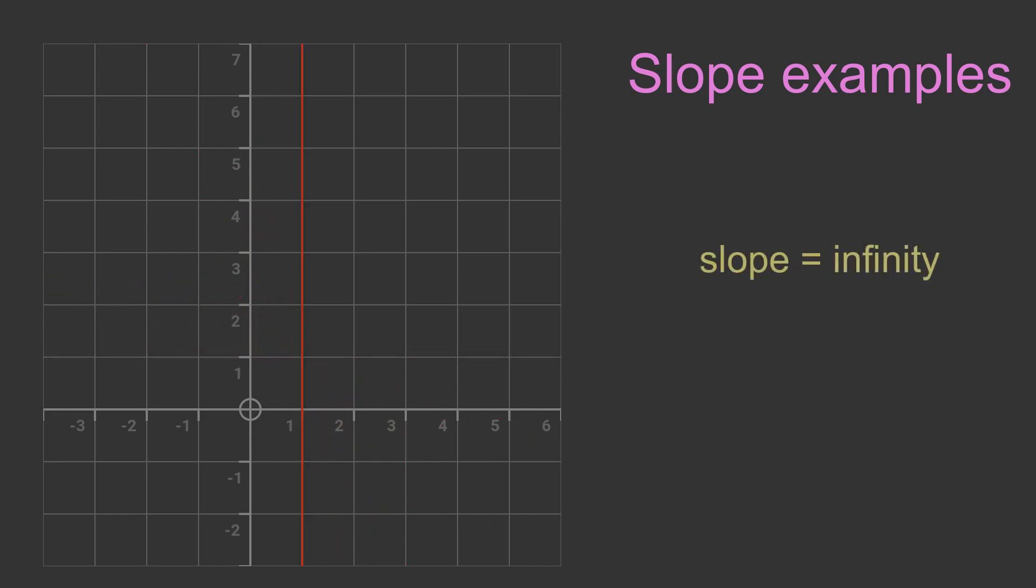A vertical line has infinite slope. This means the X value is always the same for any value of Y.